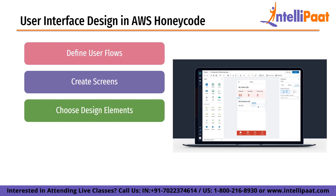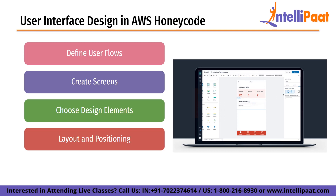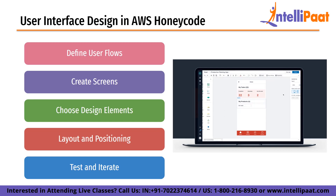Design elements should be consistent across the app to create a cohesive user experience. Next is layout and positioning — arranging input fields, buttons, and other controls in a logical and easy-to-use manner, with elements positioned to support the user's needs. The last step is to test and iterate. After the screens are designed, test the UI with users and iterate based on their feedback. User testing can help identify usability issues, and iterating based on feedback can lead to a UI optimized for the user's needs and preferences.